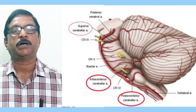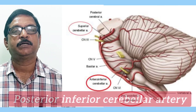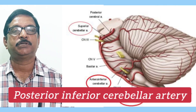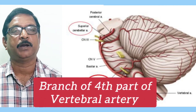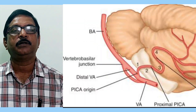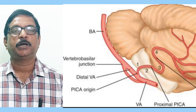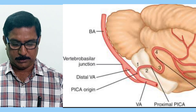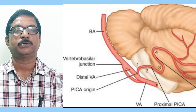The next tortuous artery is the posterior inferior cerebellar artery, which is a branch from the fourth part of the vertebral artery. The tortuosity of this artery allows it to adapt itself to the different movements of the neck. So this artery is also tortuous.